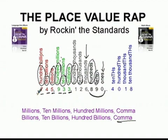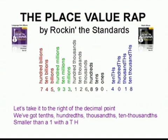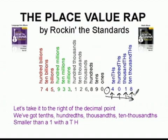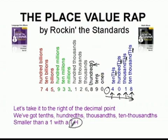Let's take it to the right of the decimal point. This last part of the chorus helps us with all the numbers to the right side of the decimal point — these are decimals. Tenths is the name of the first place, then hundredths, then thousandths, and then ten thousandths. Notice that all of these words end with 'th' — as compared to hundreds with no 'th', we stick the 'th' in and get hundredths; tens becomes tenths. We also say it's smaller than a one because all of these numbers over here are worth less than one whole.